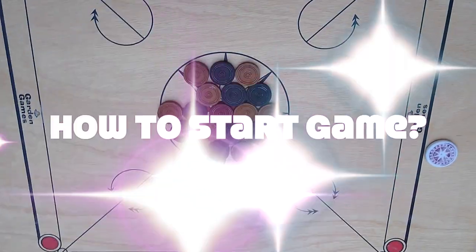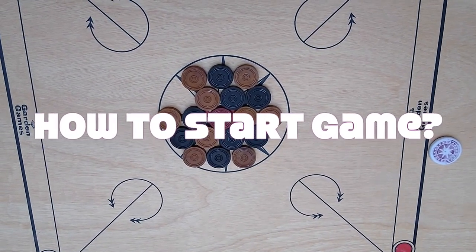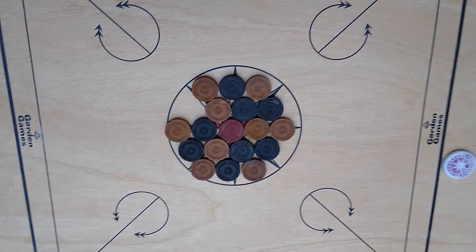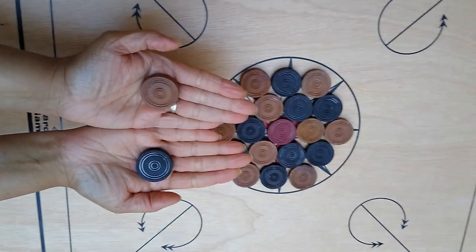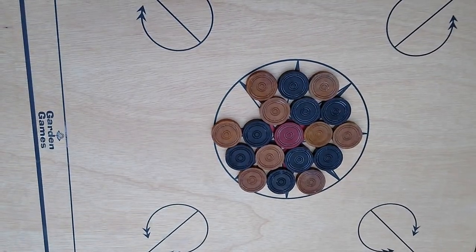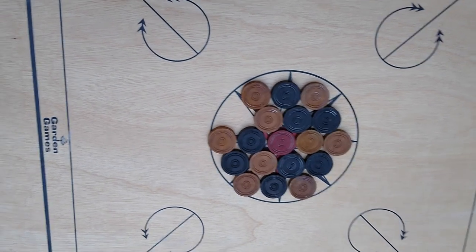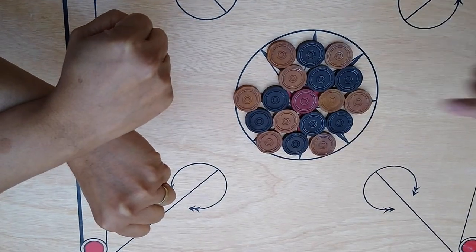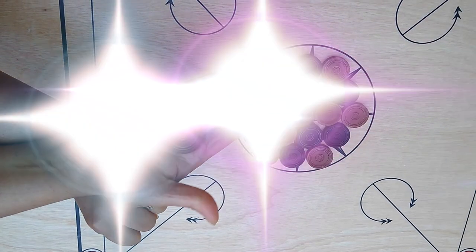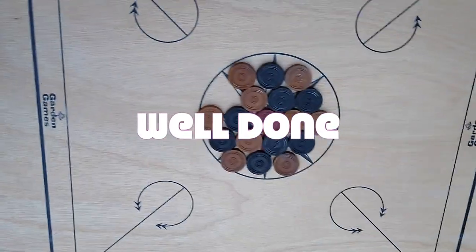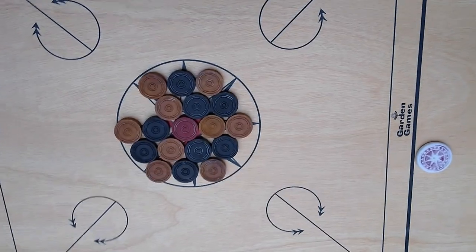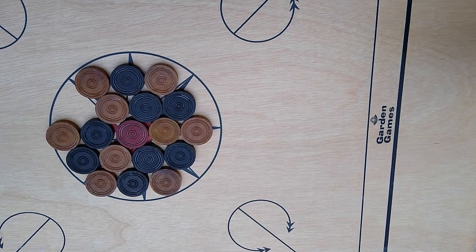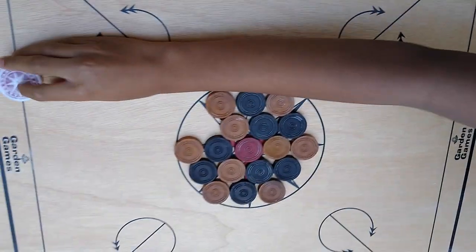Before we start the game, you need to decide who's going to strike first. The umpire gets one black coin and one white coin and puts them behind the back and muddles them up so the two players don't know which is which. I'm going to pick that the white one is in the right hand, and that is correct. I can decide if I can strike first or give it to the opponent. I'm going to give it to the opponent.